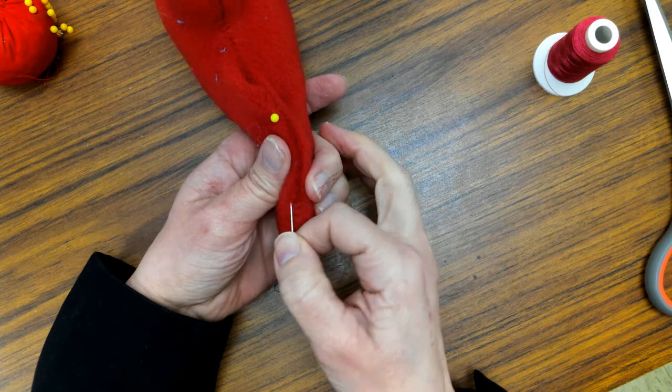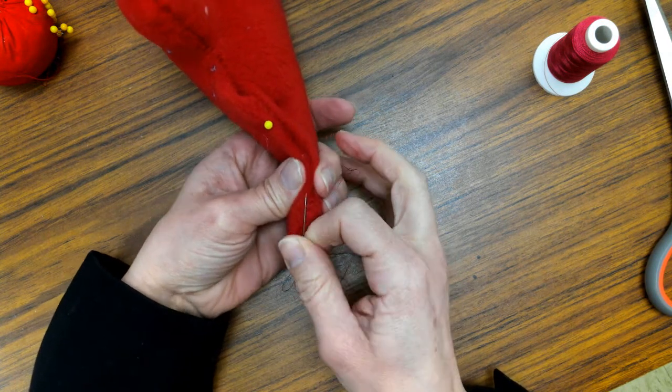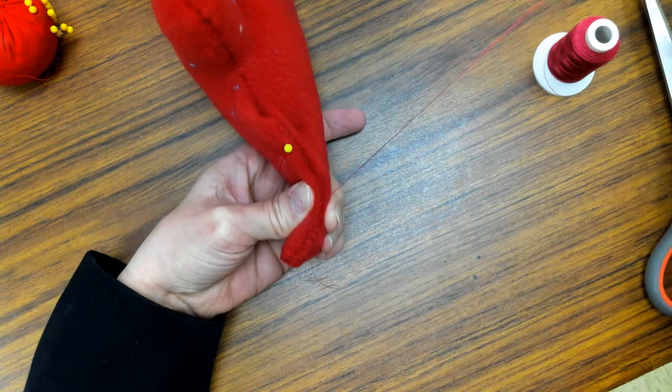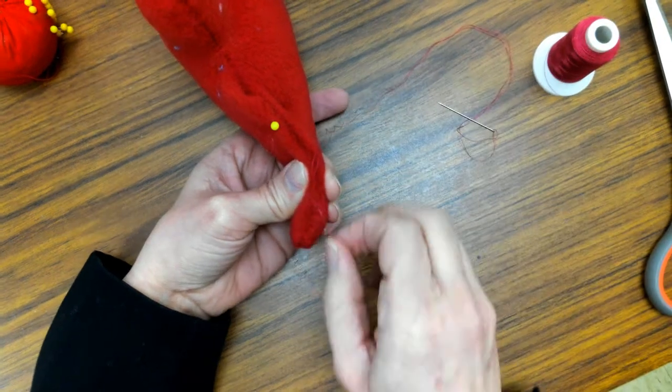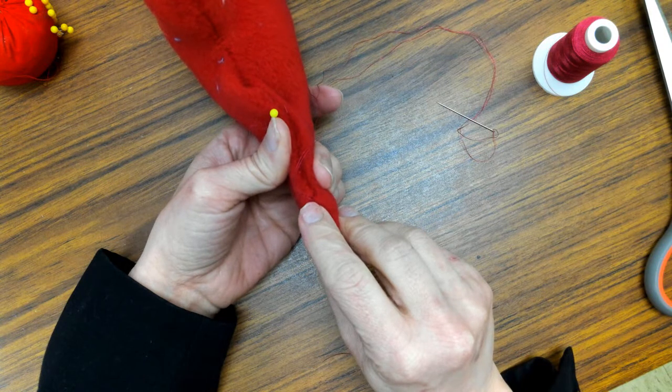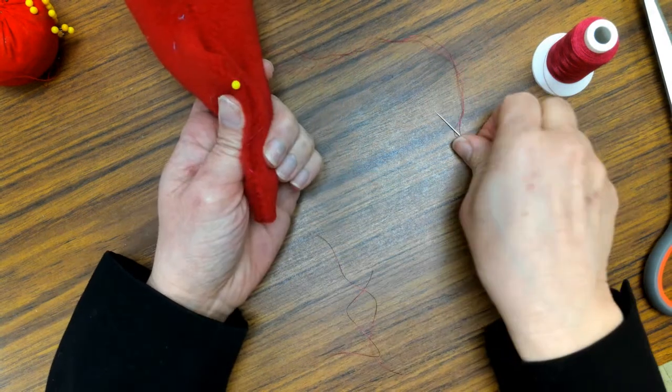And I just go on one side of my seam, and I'm going to go in and out just like that. And then I'm going to pull it tight. Pull it tight. And you can see my stitch just a little tiny right there. And then I'm going to go to the other side.